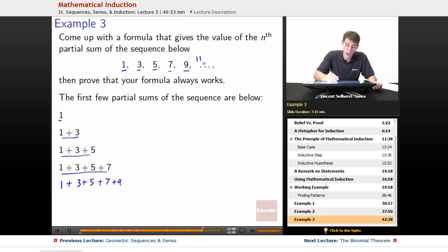If we were to keep going with this pattern, what would be next? Well, that'd be 11 next, right? We're adding by 2 each time, so 1 plus 3 plus 5 plus 7 plus 9 plus 11. Let's see if we can figure out what the pattern going on here is. So 1 on its own, well, that's just 1.